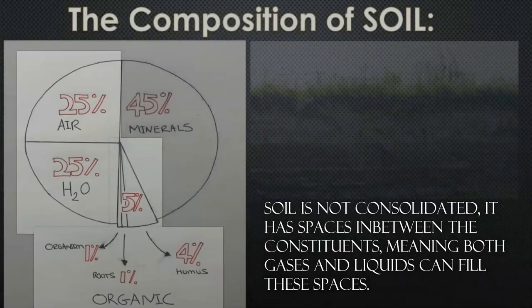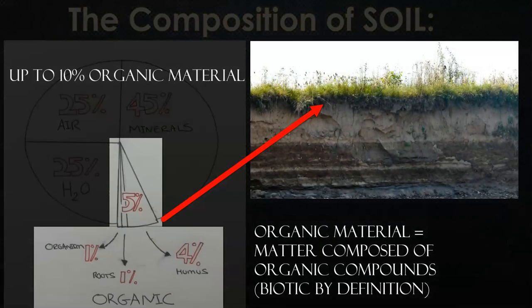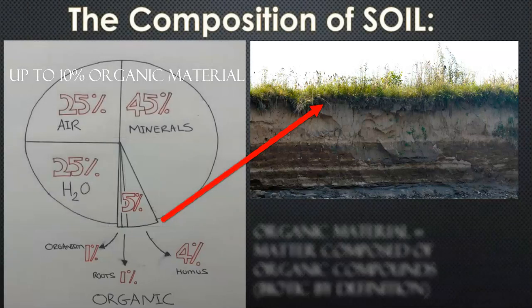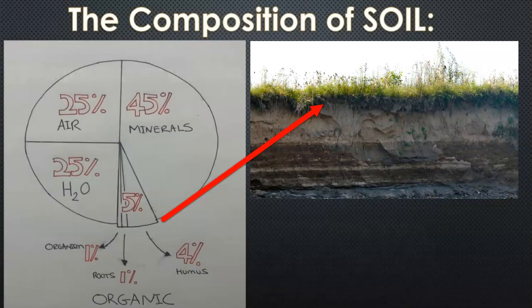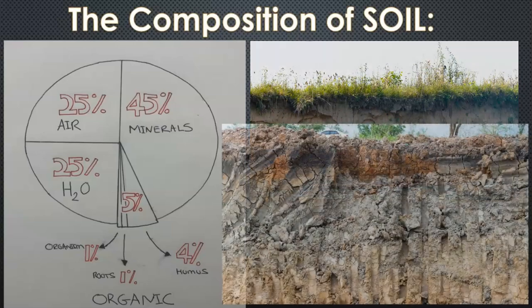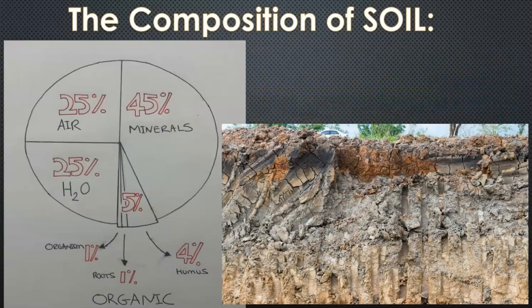Then you've got a small amount which can vary between zero and ten percent, which is basically organic material. It can be broken down into humus, roots and basic organisms, and how these combine into an organic mixture and component of the soil. We start with the largest component, minerals — that's the physical, solid, unconsolidated rock part of the soil.